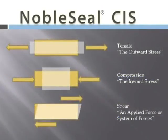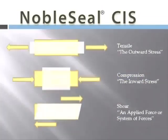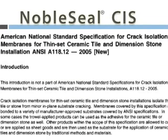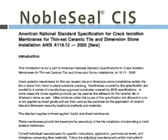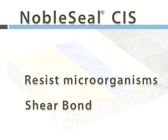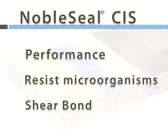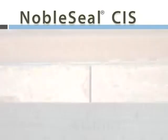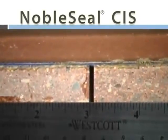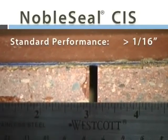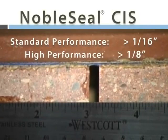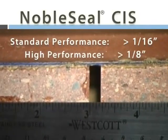It would not be advantageous to add a compressible membrane in a tile installation. ANSI A118.12 is the standard for crack isolation membranes. The standard measures a variety of performance areas such as shear bond and resistance to microorganisms — important to avoid mold growth. Perhaps the most important element, performance system crack resistance, is a measure of the membrane's ability to prevent tile from cracking when the substrate moves. There are two levels of performance: standard performance requires the membrane to protect tile when the substrate separates more than 1/16 inch, while high performance requires the membrane to prevent cracking when the substrate is opened more than 1/8 inch.